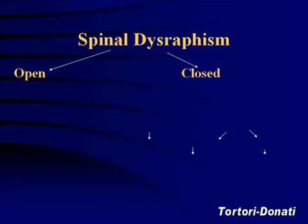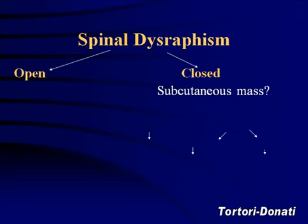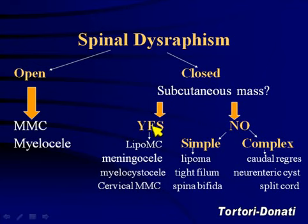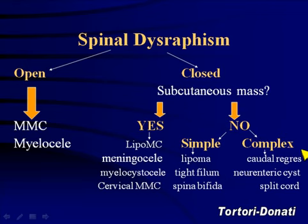Spinal dysraphism can be separated into open and closed types. In closed spinal dysraphism, you can further separate them between those that have a subcutaneous mass and those that do not. With open neural tube defects, these are not skin covered — you'll have a meningomyelocele or a myelocystocele. With closed subcutaneous masses, if a mass is present, it can be a lipomeningocele, a meningocele, or a cervical myelomeningocele or myelocystocele. If there is no mass, it can be a simple lipoma, tight filum, caudal regression, a split cord, or a neuroenteric cyst.